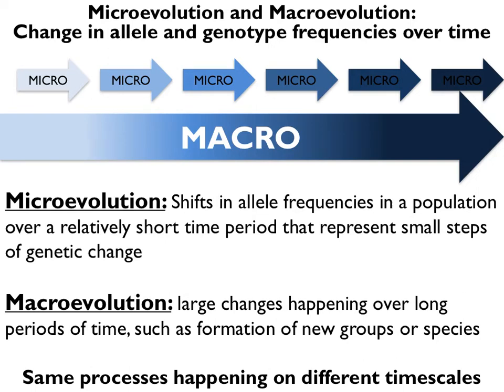These small steps then add up to macroevolution, which are larger changes that happen over longer periods of time, such as the formation of new groups or new species, occurring through changing biological characteristics of a given population over time.